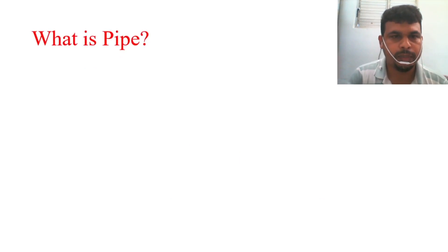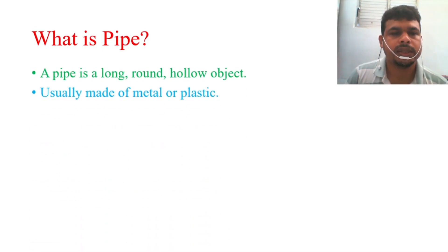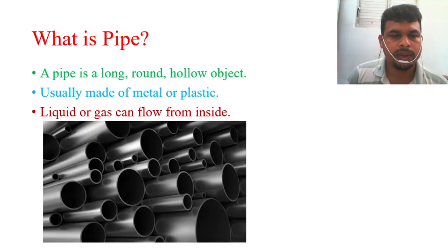A pipe is a long, round, hollow object. The pipe is made of metal or plastic. Liquid or gas can flow from inside. So you see in these photos the pipe is a long, round, and hollow object. You will be able to understand from these photos how pipe looks like.